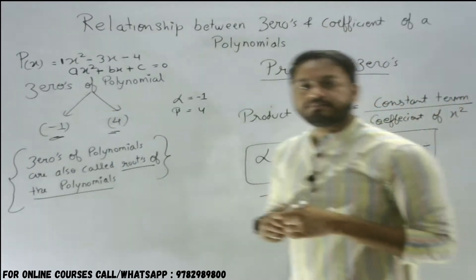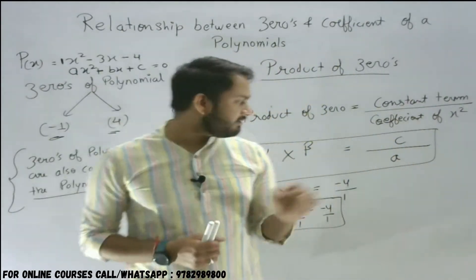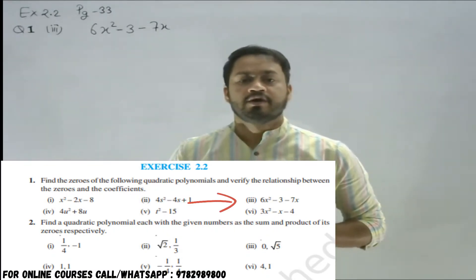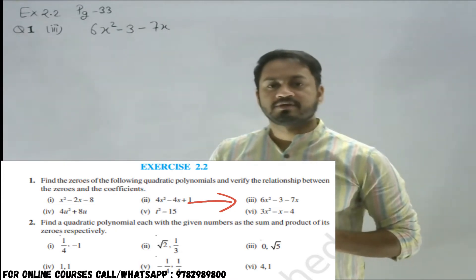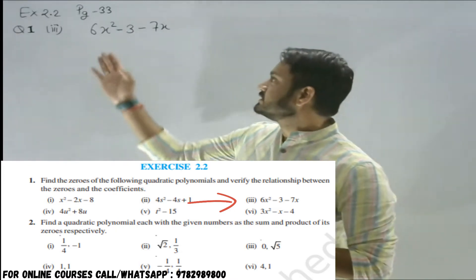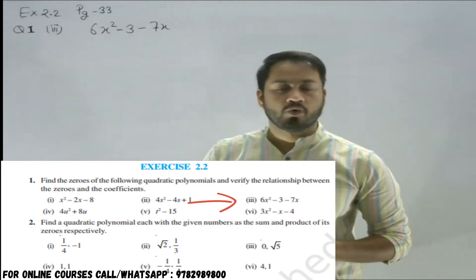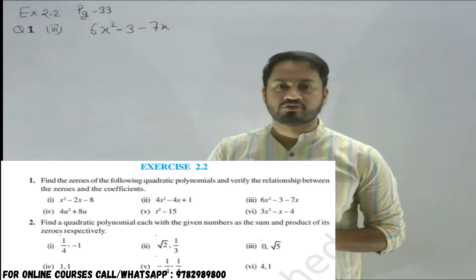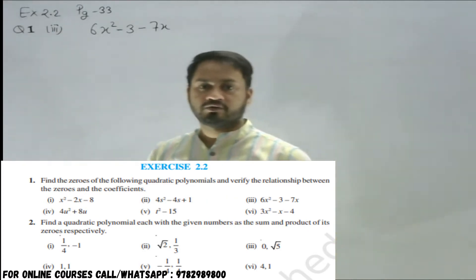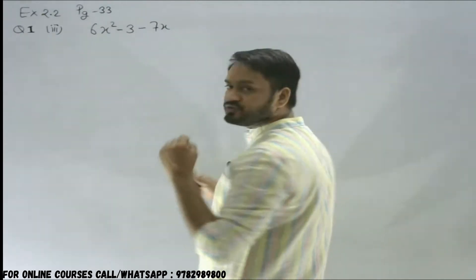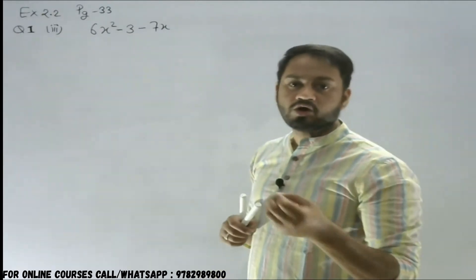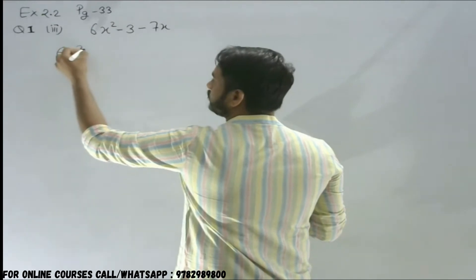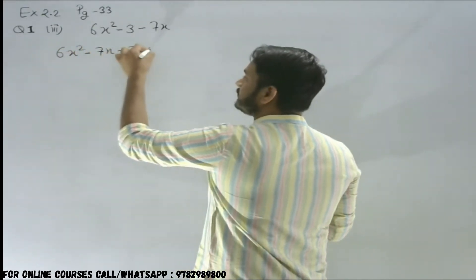There is a question in Exercise 2.2 of Class 10 to verify this relationship. Let's start Question 1, Part 3: 6x squared minus 3 minus 7x. We need to find the zeros and then verify the relationship between the zeros and the coefficients. First, we arrange it properly as 6x squared minus 7x minus 3 equals 0, matching the standard form ax squared plus bx plus c equals 0.